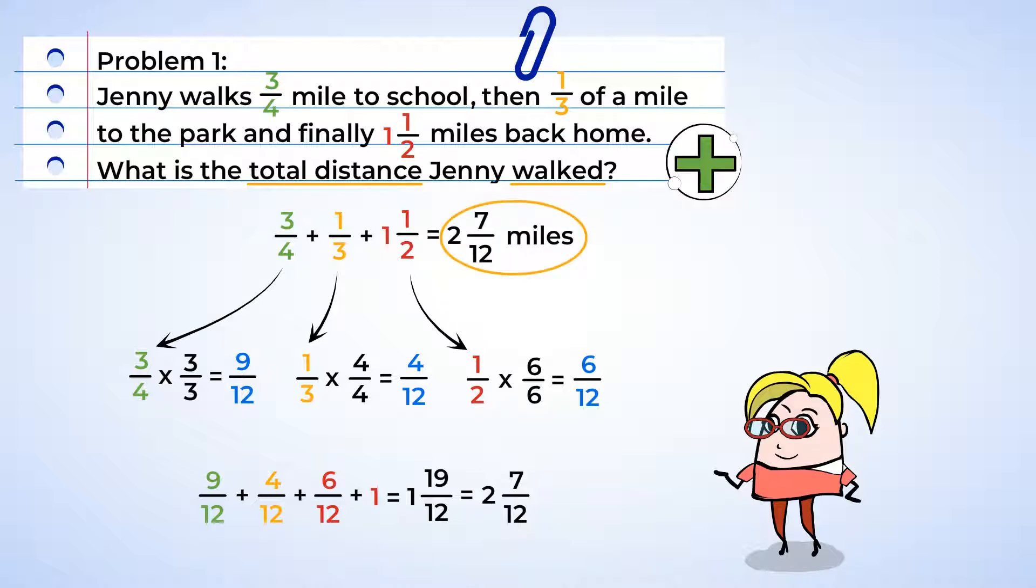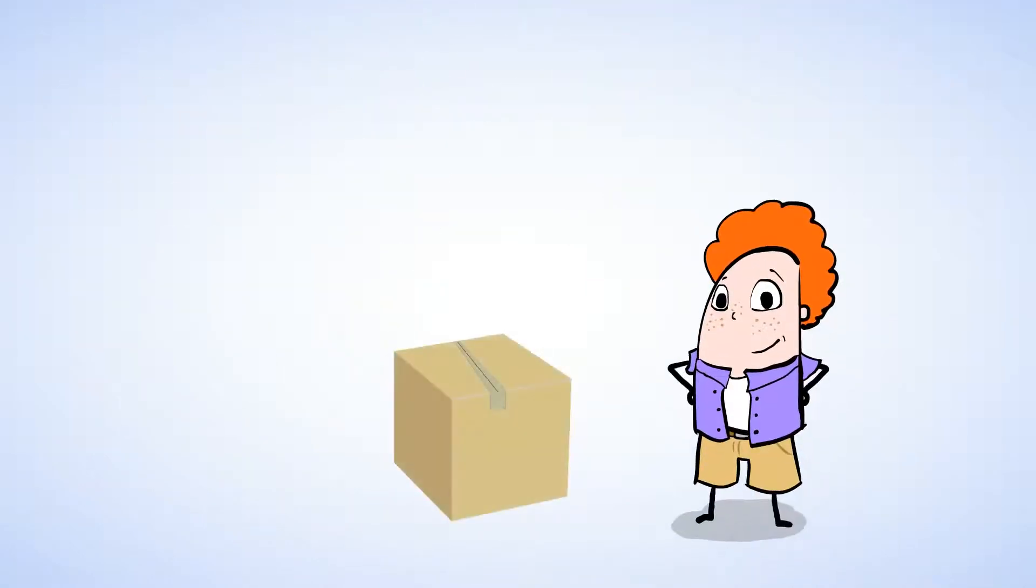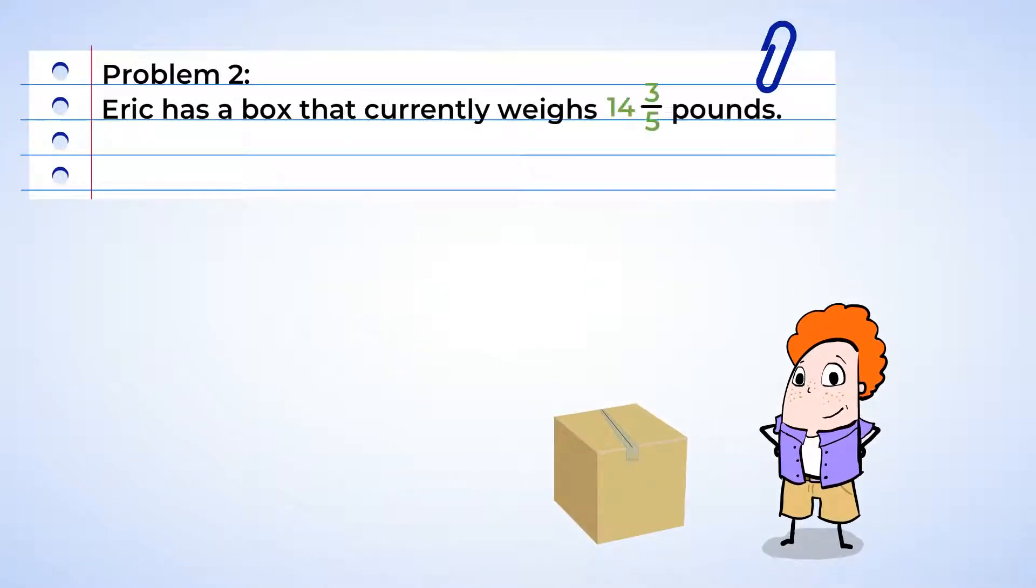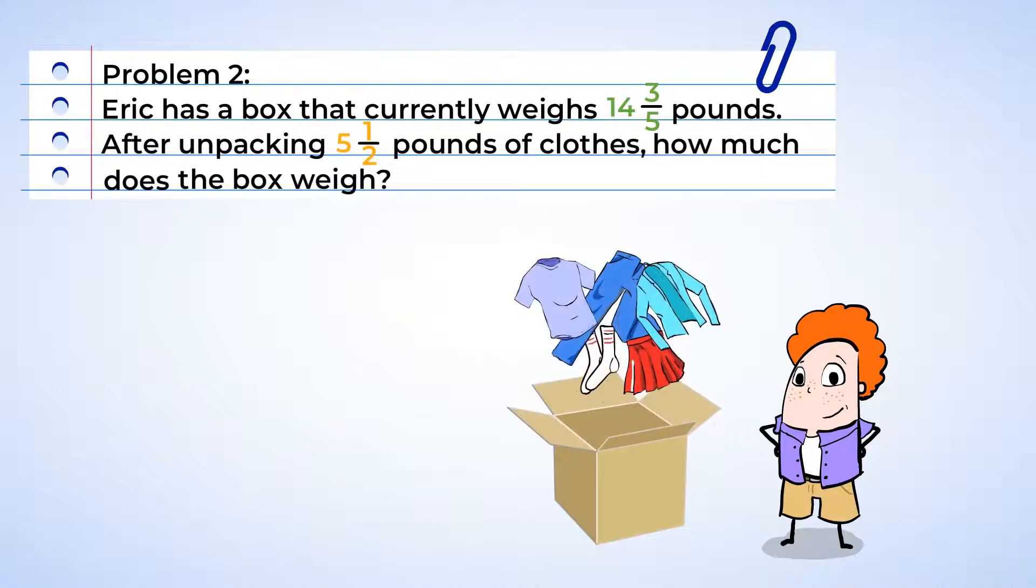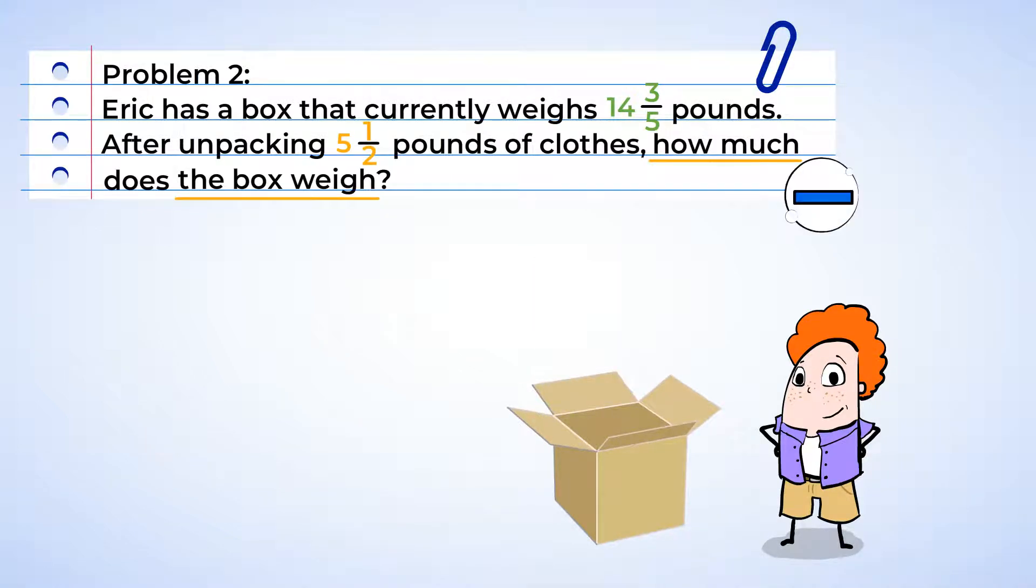But it looks like Jenny isn't the only one working out today. Let's help Eric with those boxes. Eric has a box that's filled with a bunch of clothes. The box currently weighs 14 and three fifths pounds. After unpacking five and a half pounds of clothes, how much does the box weigh? Since Eric is taking clothes out of the box, that means that the weight will lower. And so we will need to subtract in order to find the new weight of the box.